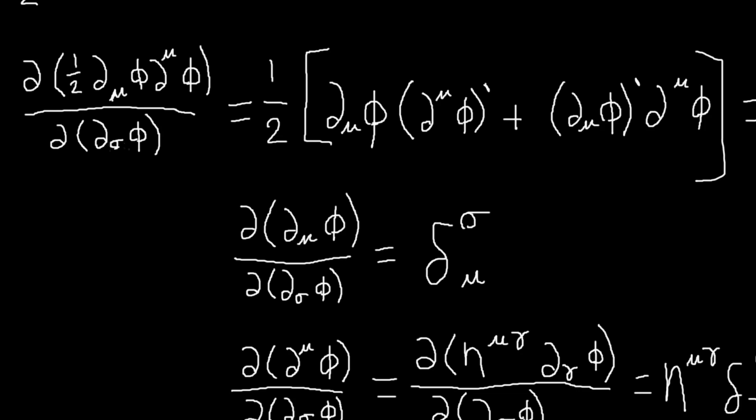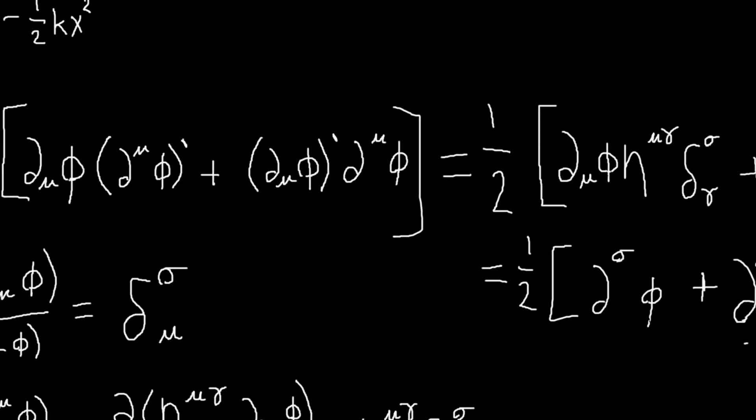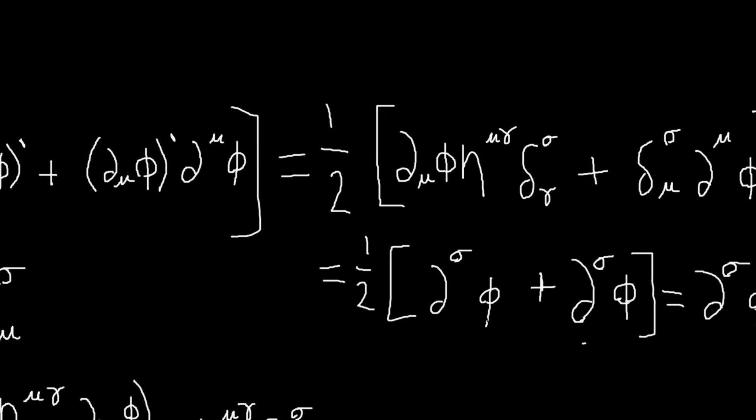So now that we've calculated those, we can plug those in here. Yeah, so this goes here and that goes there. And this is very easy to calculate, to work with. This will raise this index, so it'll be d gamma phi, or sorry d gamma phi. And then this delta function will change that gamma to a sigma, so it'll become d sigma phi. And we get the same thing here. This mu just will become a sigma because of the Kronecker delta. And so I just have two of these that I add together and the one half, so I just get this: d sigma phi.